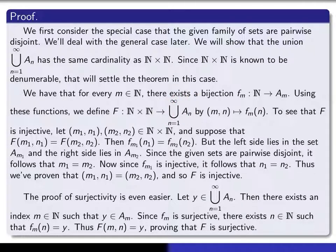What we do is we map a given ordered pair, m comma n, into f sub m of n. In other words, we use the first index to tell us which of the f's to use. The m tells us we should use f sub m, and the second index is what we evaluate the f sub m at.